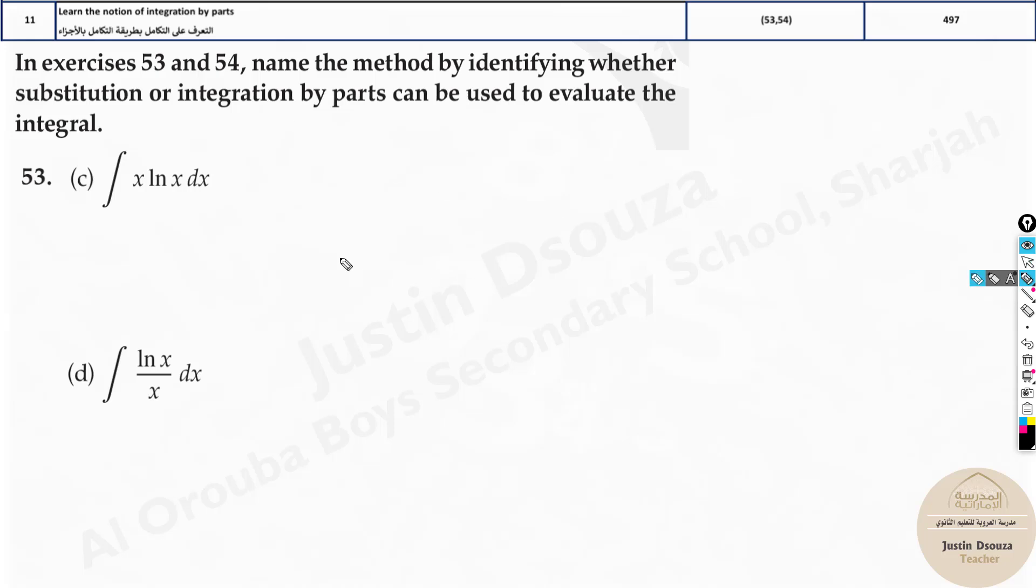Now for this particular problem, you need to know, no matter what, we solve it by integration by parts when it's multiplied. But even now, if you're thinking why exactly, it's fine. Now you take u equal to ln x. Derive it. Du by dx is 1 by x.